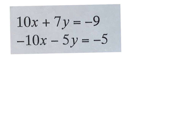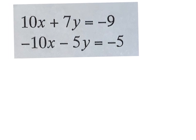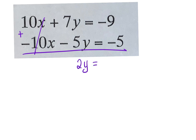With elimination, we are really looking for a variable that will eliminate if we add. So it means we're looking for a variable that has the same coefficients — just one's positive and one is negative. In this case, you can see that your x's have a positive 10 and a negative 10. So this one is ready to just add straight down to solve.